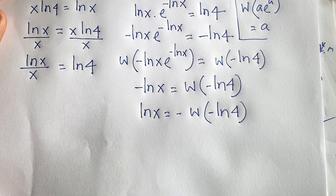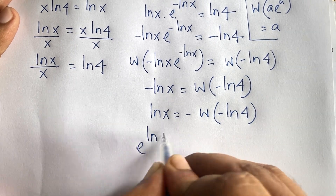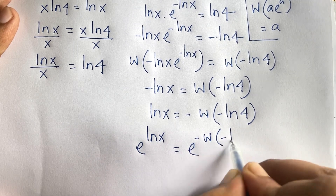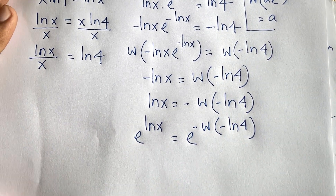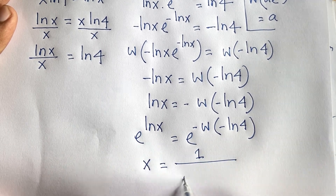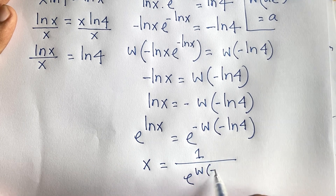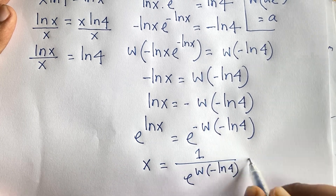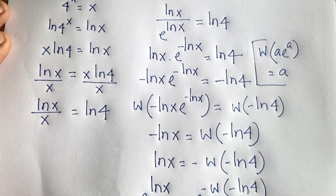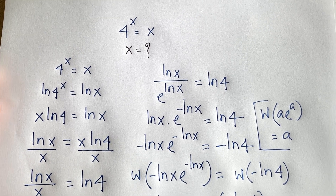Now if I want to find the value of x, I apply e to the power on both sides: e to the power ln x equals e to the power of minus W of minus ln 4. So e to the power ln x equals x, and it will be 1 over e to the power W of minus ln 4. This is our final answer — the value of x. Thank you all, if you enjoy this video please subscribe to my channel for more interesting videos. Goodbye, take care.